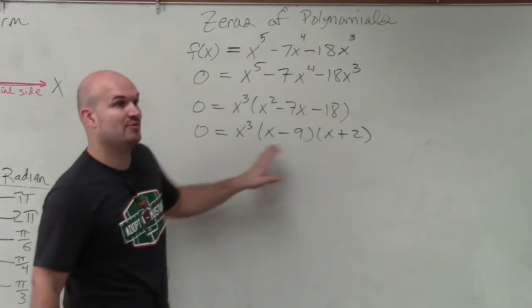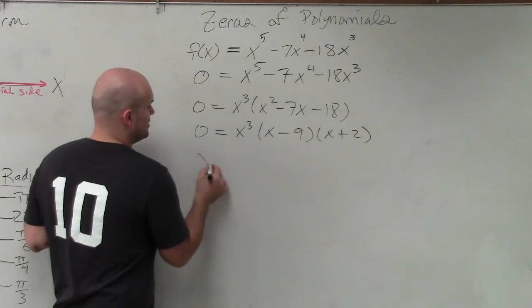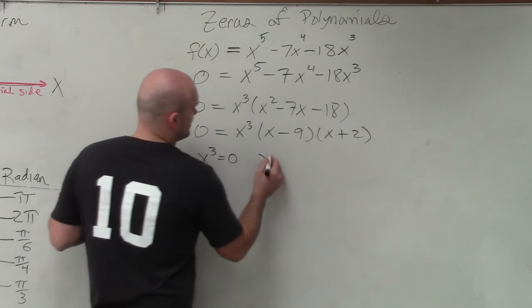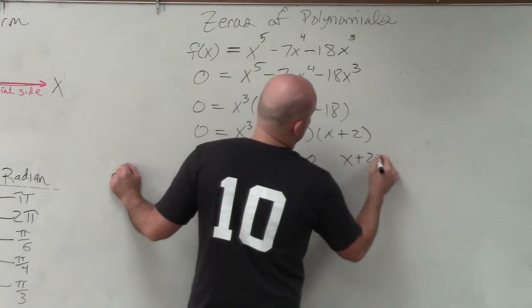Now we have the product of three factors set equal to 0. So I have x cubed equals 0, x minus 9 equals 0, and x plus 2 equals 0.